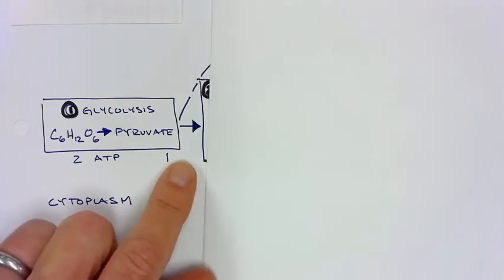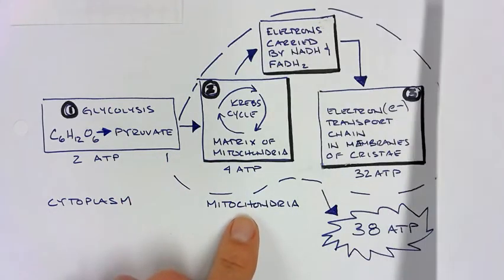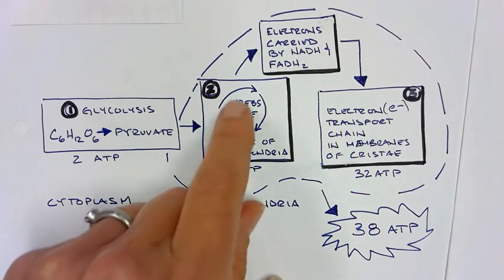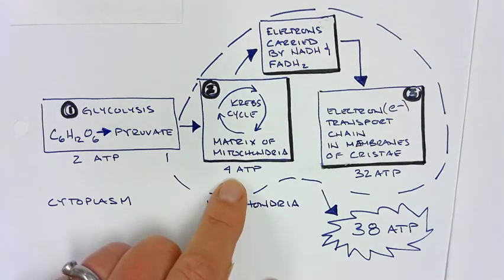That pyruvate then goes into our mitochondria, or is absorbed into the Krebs cycle, which occurs in the matrix of the mitochondria, where we have a net gain of 4 ATP.